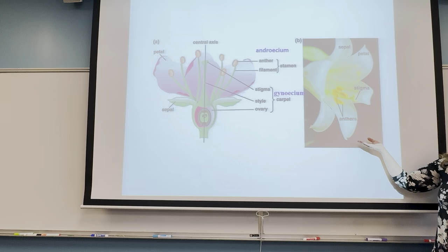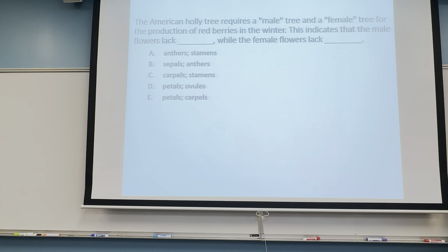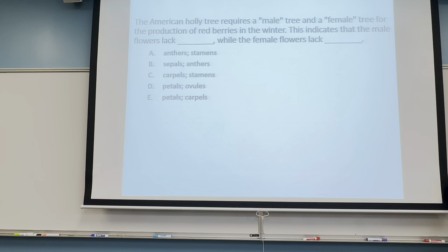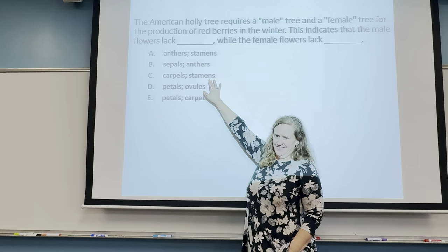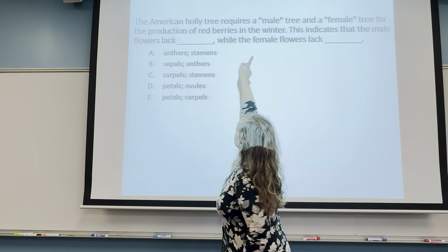The American holly tree requires a male tree and a female tree for the production of red berries in winter. This means the male lacks carpels and the female lacks stamens. Thinking backwards: males do not have carpels, females do not have stamens.